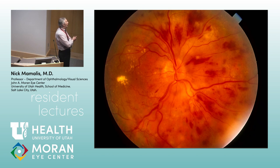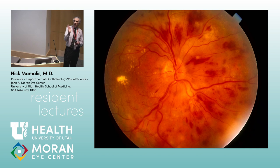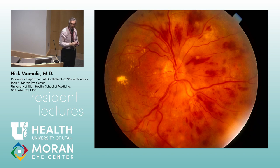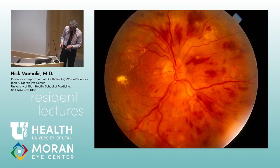Why are superficial hemorrhages more flame-shaped? Because they're in the nerve fiber layer. That layer runs parallel to the surface as it goes into the optic nerve. So superficial hemorrhages have that flame shape, while deeper hemorrhages tend to be dot and blot. Here you can see both dot-blot and flame hemorrhages, some macular exudate, and maybe a little ischemia.